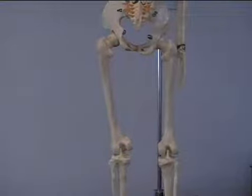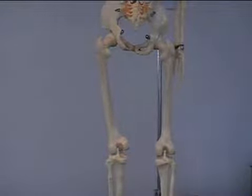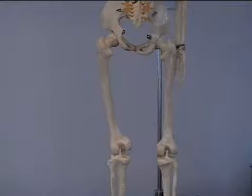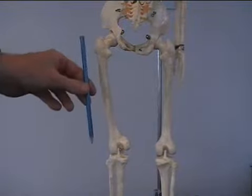So the hamstring group all work over the knee joint and the first one we're going to look at is bicep femoris. Bicep femoris is the outside hamstring.